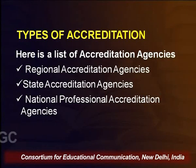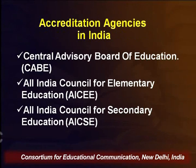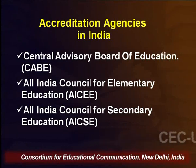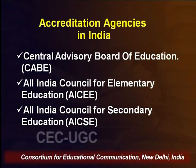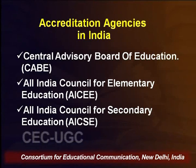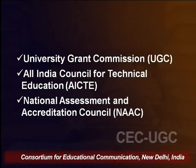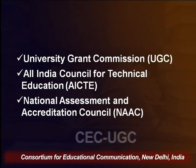There are different types of accreditation: regional accreditation agencies, state accreditation agencies, and national professional accreditation agencies. The accreditation agencies in India include the Central Advisory Board of Education (CABE), All India Council for Elementary Education (AICEE), All India Council of Secondary Education (AICSE), University Grants Commission (UGC), All India Council for Technical Education (AICTE), and the prime body — the National Assessment and Accreditation Council (NAAC).